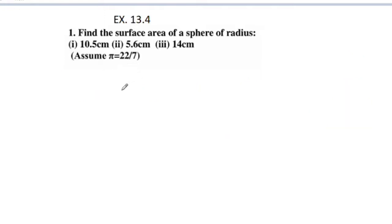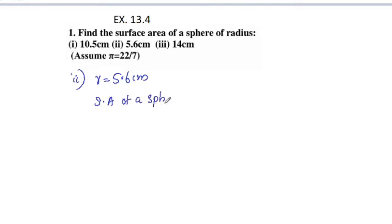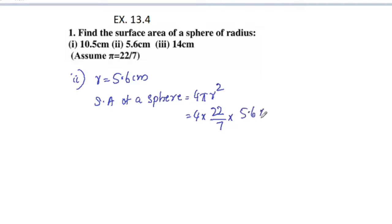Second part: r is equal to 5.6 centimeter. Surface area of a sphere is equal to 4 pi r squared. Substituting values: 4 into 22 by 7 into 5.6 into 5.6, r squared.